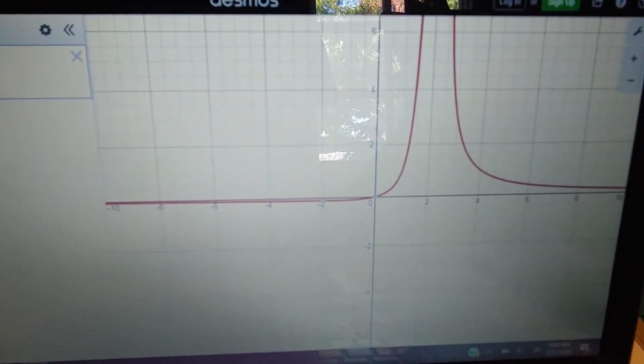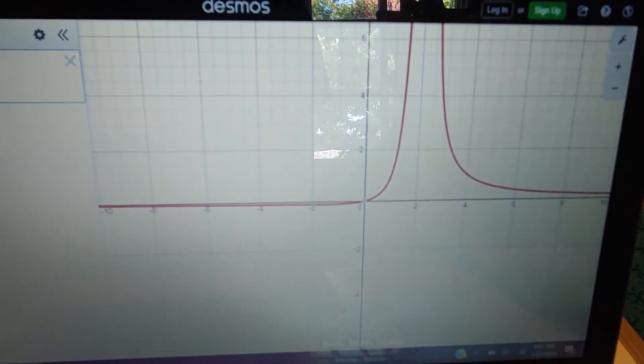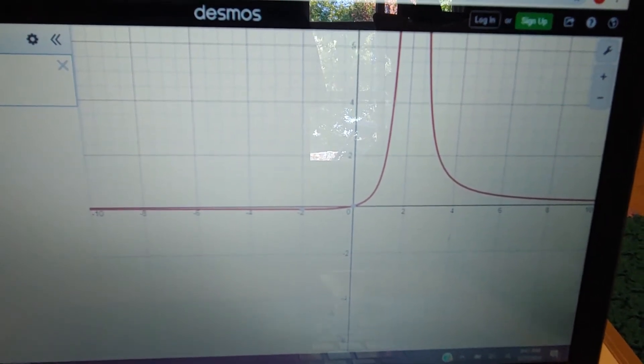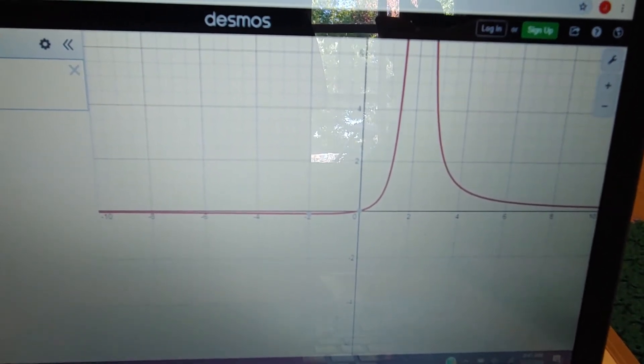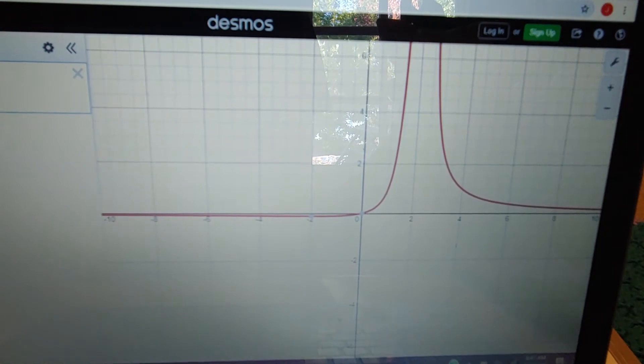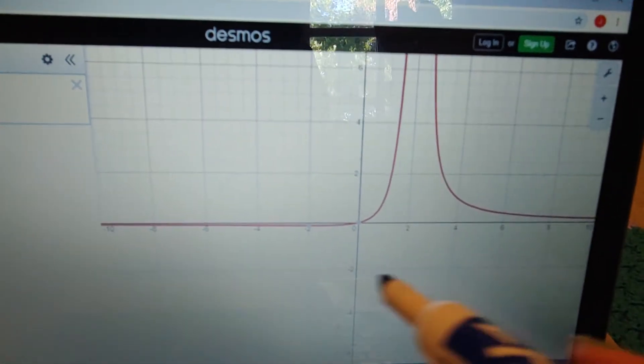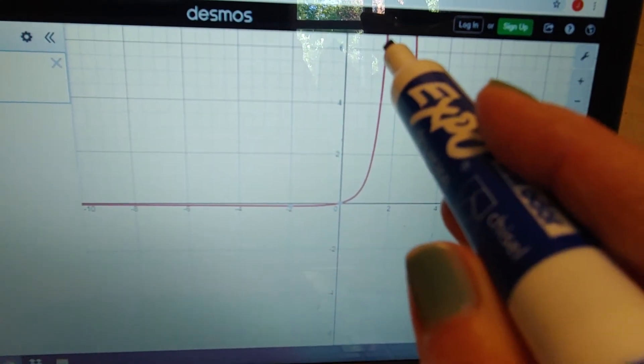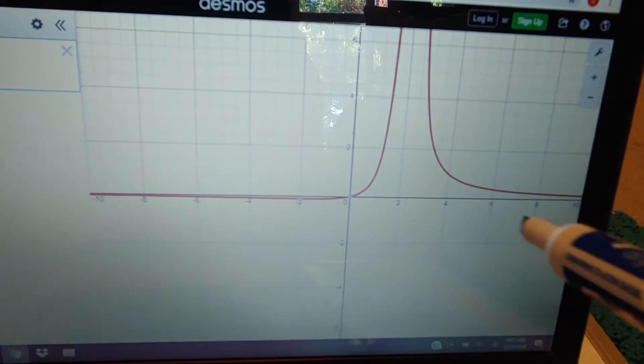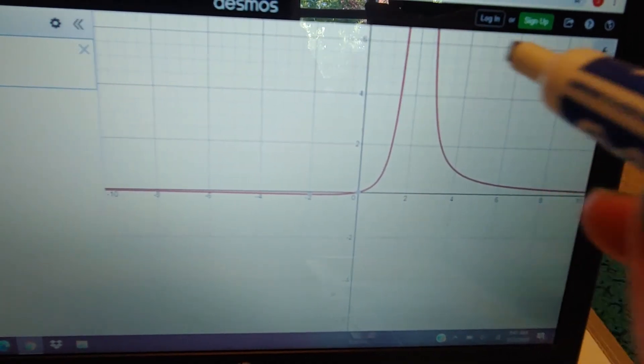What we're going to do is just do a super quick sketch. It doesn't have to be exact, but we're just going to kind of do a quick sketch. You can see that we have that vertical asymptote at two, and as we approach from the left side, it's going to positive infinity. As we approach from the right side, we're going to positive infinity.